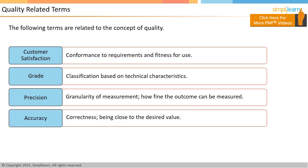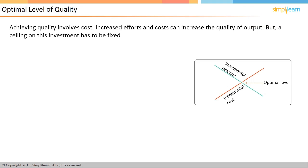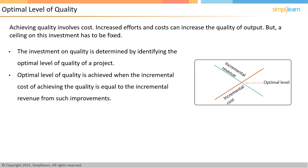In the next screen, let us understand the concept of optimal level of quality. Quality comes at a cost. More effort put into quality will give better results. However, you cannot keep on investing in increasing quality, as there is no limit to how much a product can be improved. Investment in quality is determined by knowing the optimal level of quality. As shown in the diagram, the optimal level of quality is achieved at the point where the incremental revenue from improvement equals the incremental cost to secure it.